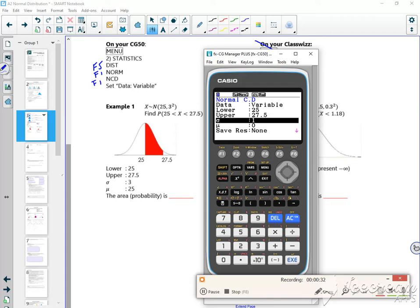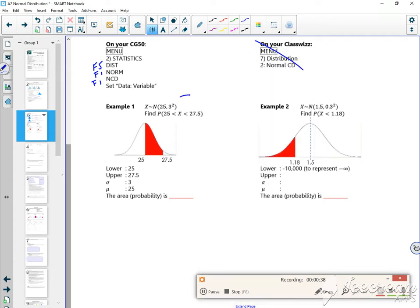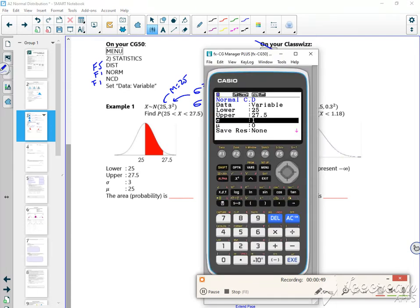Now mu and sigma are the opposite way around to how we write them, so remember that. This one here, sigma squared is 3 squared, so sigma is 3 and mu is 25. Be careful with that. So sigma is 3, mu is 25. I could just press execute a few times and it gives me the probability.